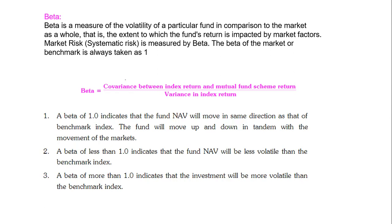Beta measures systematic risk, which cannot be avoided. Types of systematic risk include inflation, interest rate risk, unemployment, taxation, government policies, and monetary policies — we cannot change these factors. These factors affect our returns. Whenever a budget is announced by the finance minister, you will find changes in the market and prices falling. These unavoidable factors are called systematic risk, which is also called market risk, and it is measured with beta.